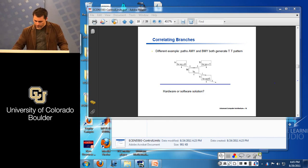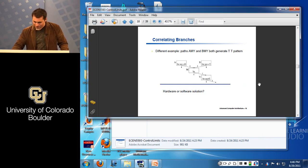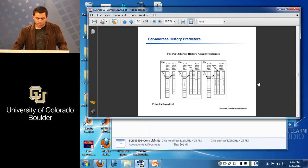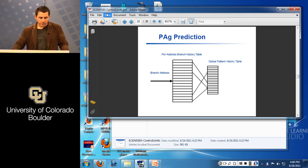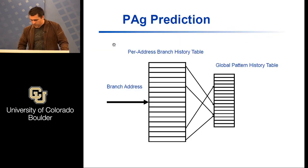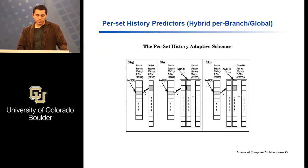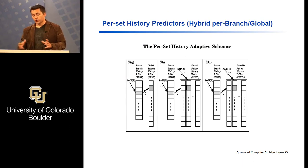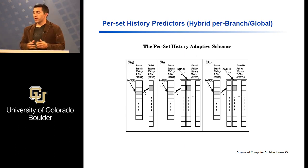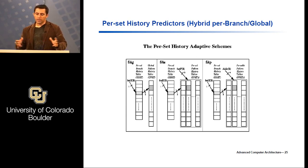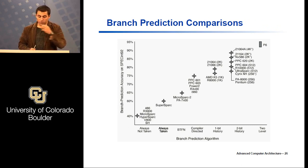Coming back to the PAG, PAP variations — the SAG, SAS, and SAP are hybrid per-branch/global systems. It's too expensive to maintain information and a table for every branch. The set-based systems like SAS say: allow groups of branches to share locations, reducing the cost of a full per-branch scheme while still benefiting from positive aliasing. That's where we left off.